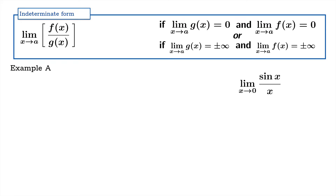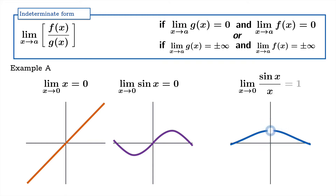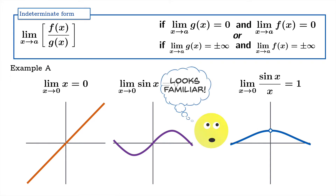Example A: the limit as x approaches zero of sin(x) over x. The limit of both the numerator and denominator equals zero as x approaches zero. Looking at a graph of sin(x)/x, the limiting value appears to be one. You've probably seen this before and worked through a geometric argument as to why it equals one. This limit is required when you learn what the derivative of sine has to be, and it's very likely you've evaluated it with methods that have nothing to do with L'Hôpital's rule.